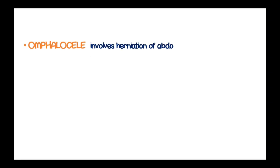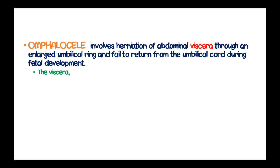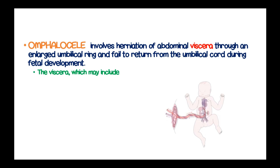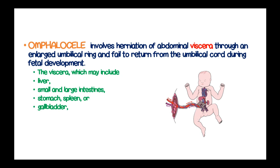Omphalocele involves herniation of abdominal viscera through the enlarged umbilical ring, failing to return to the umbilical cord during fetal development. The viscera which may herniate include the liver, small and large intestines, stomach, spleen, or the gallbladder.